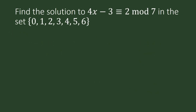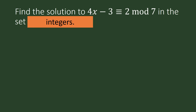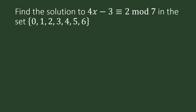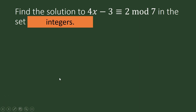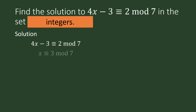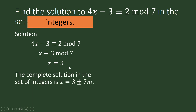From this congruence equation we can see the following. We began by looking for the solution from a restricted set and found that 3 is a solution. When we removed that restriction and looked at the entire set of integers, we found that if 3 is a solution, then 3 plus or minus any multiple of 7 is also a solution of the congruence equation.